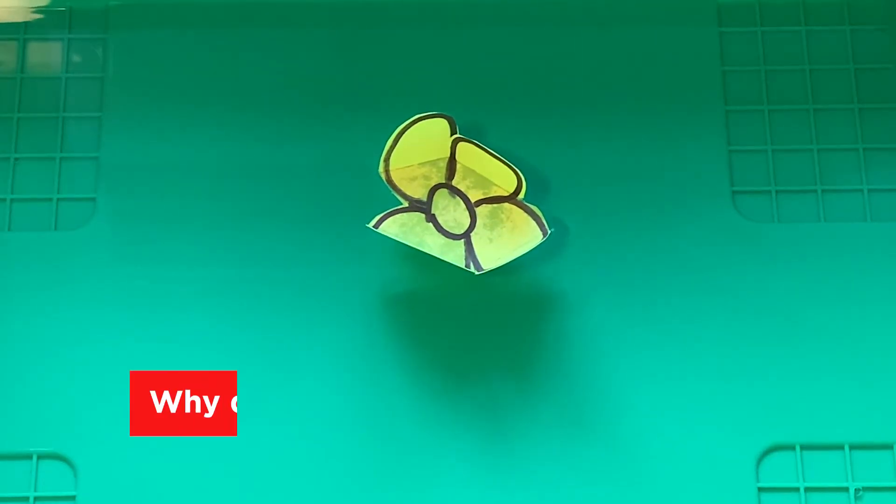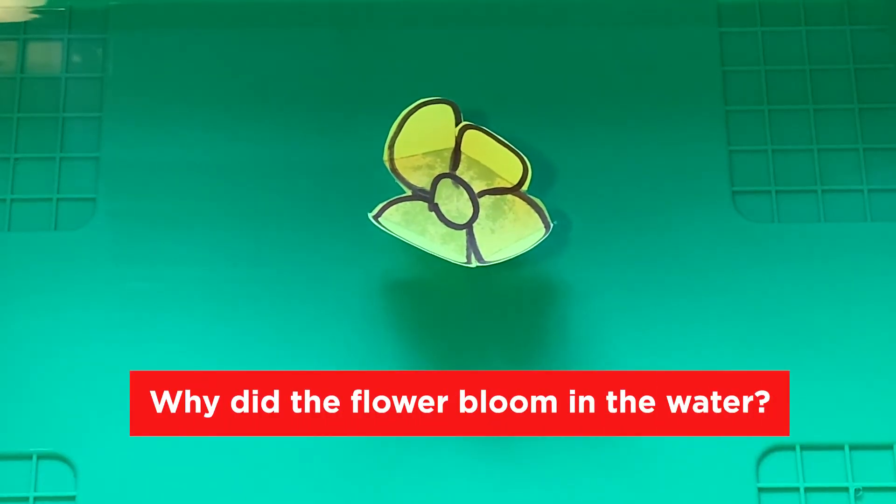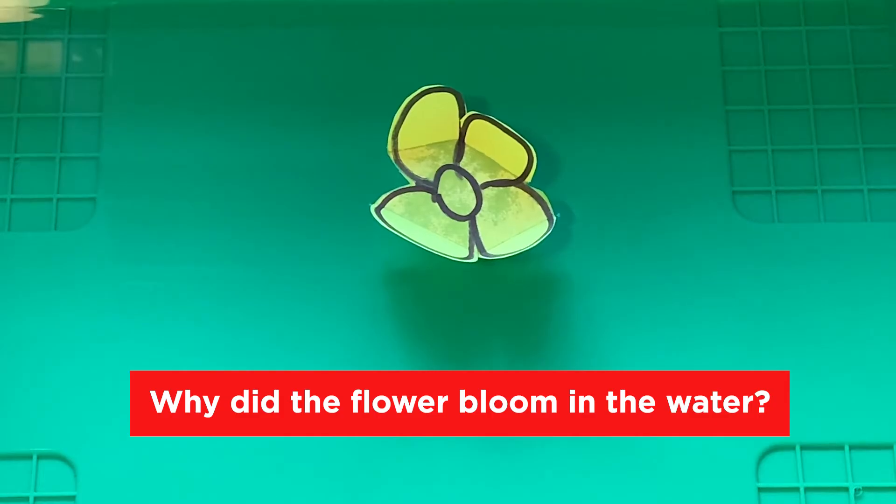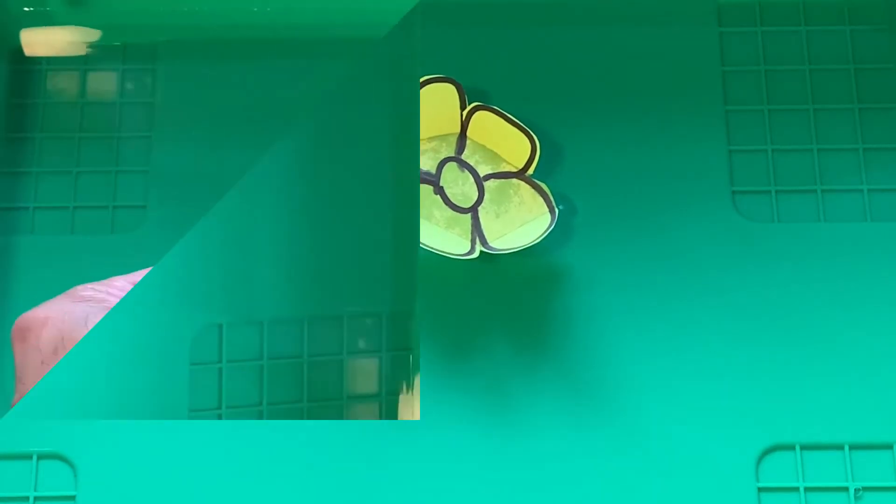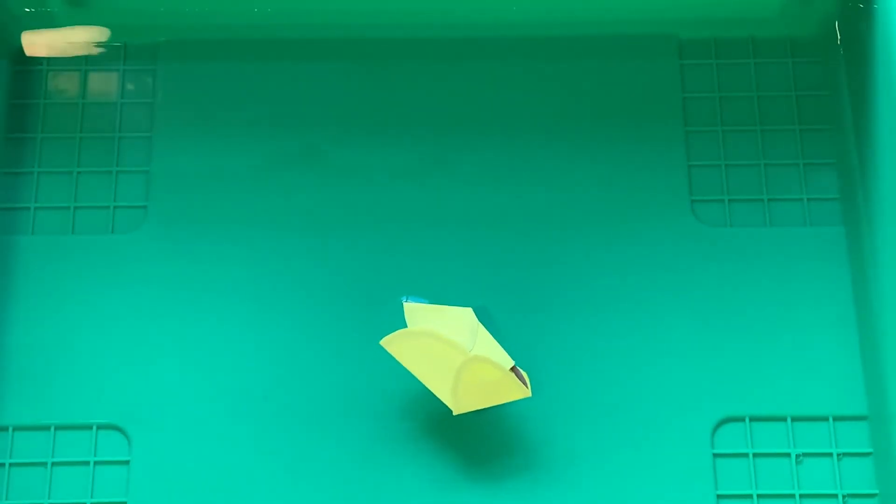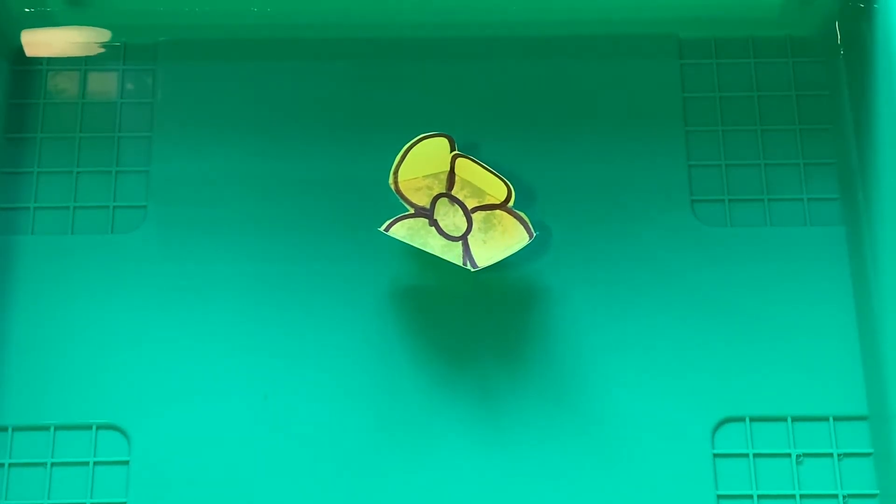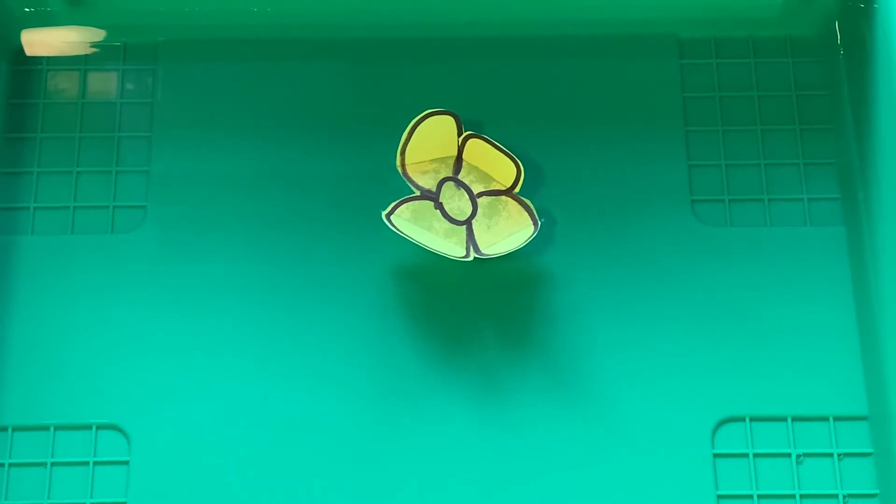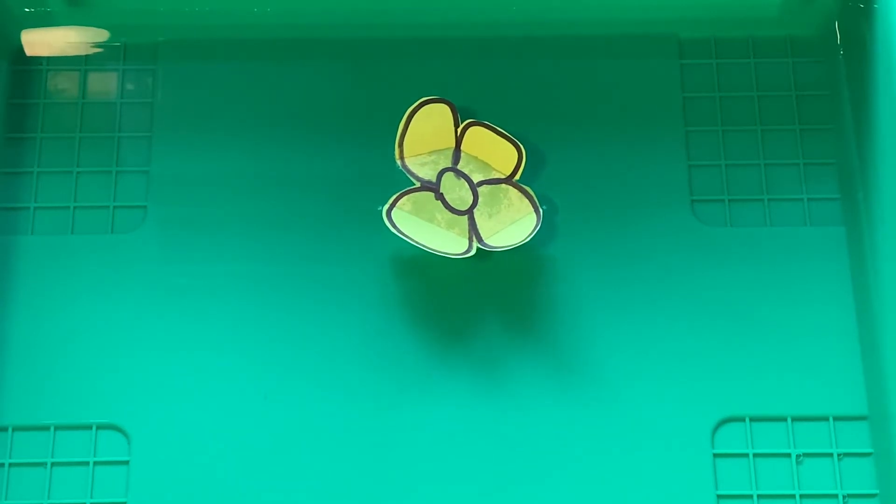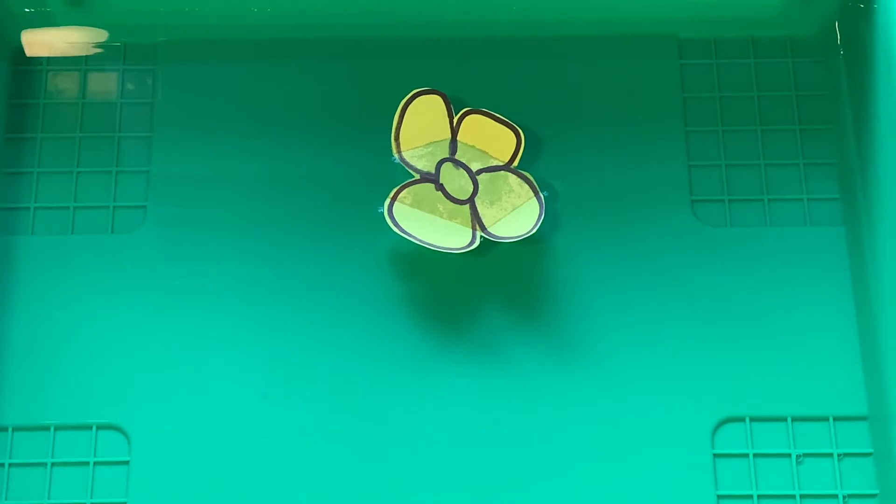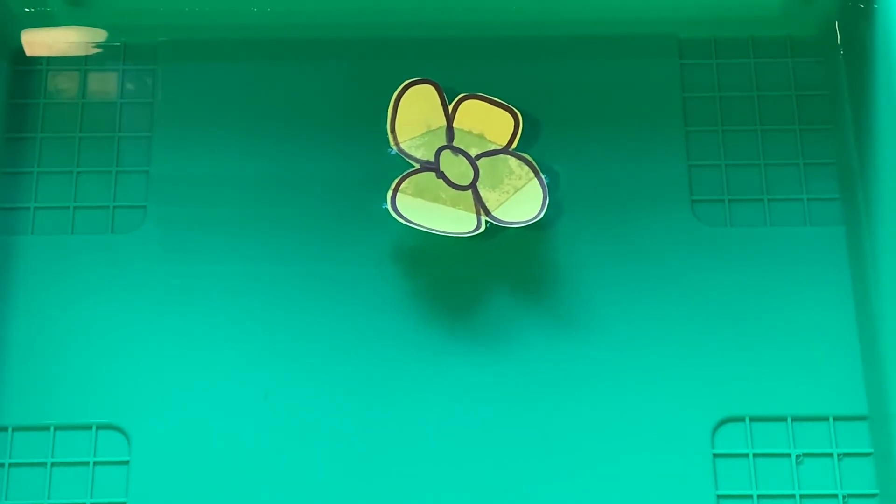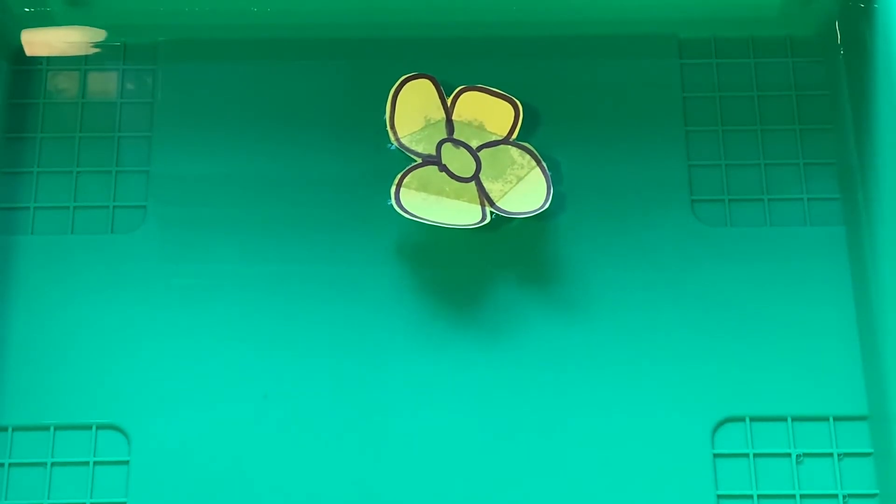But why did it bloom when we put it in the water? When your paper hits the water, it starts to absorb water. And then the paper gets thicker. And as the crease in the paper gets thicker, that first petal starts to open up, which gives room for the petal underneath to open up. And then all the petals start to open up as the paper absorbs more water. And then your flower blooms.